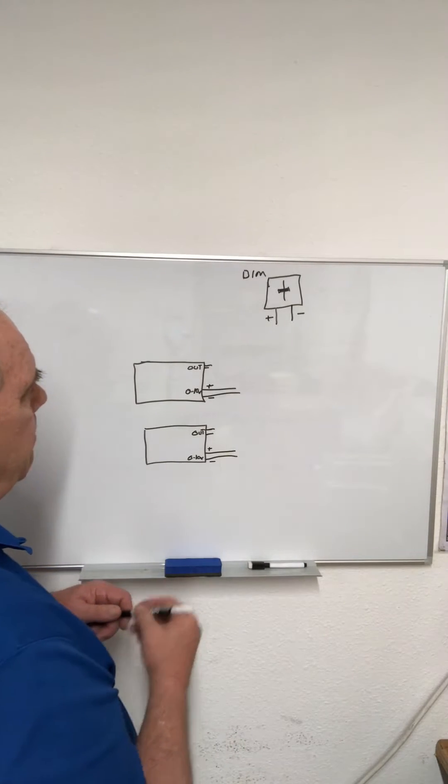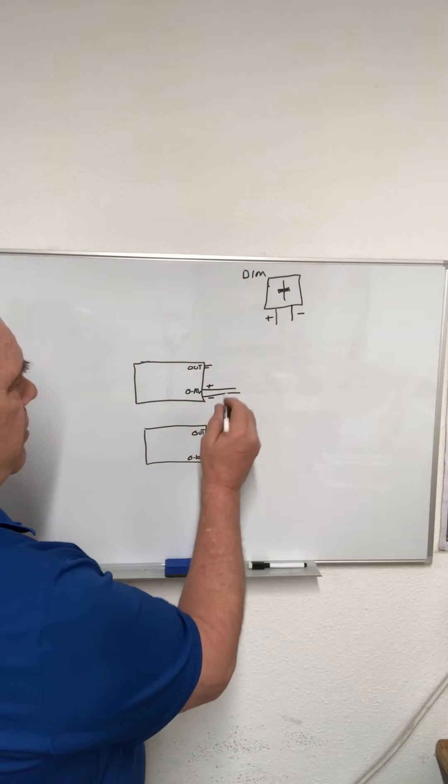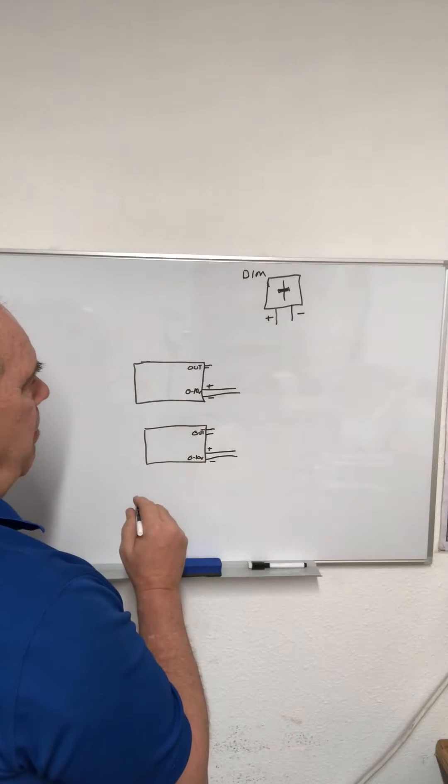There's a few ways that you can hook up the 0 to 10 dimming circuit to a dimmer or a dimming module.